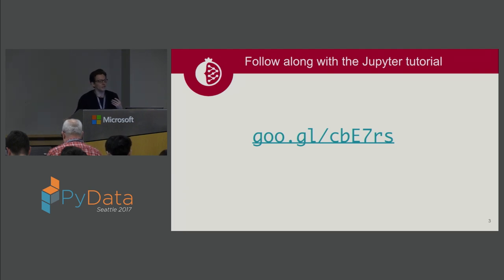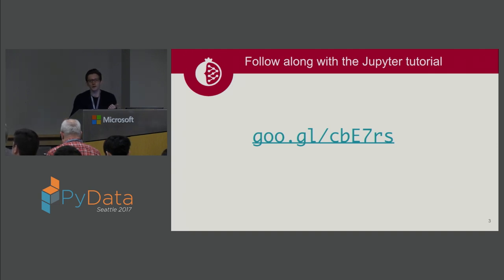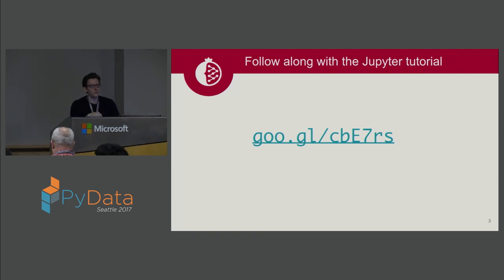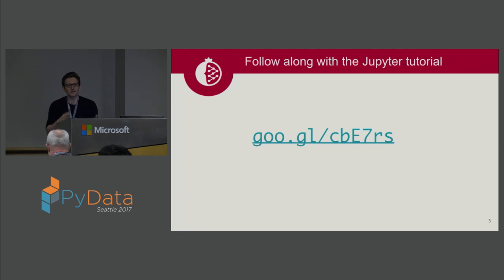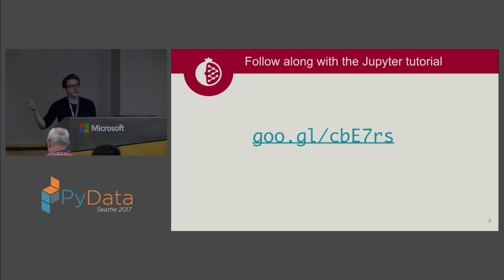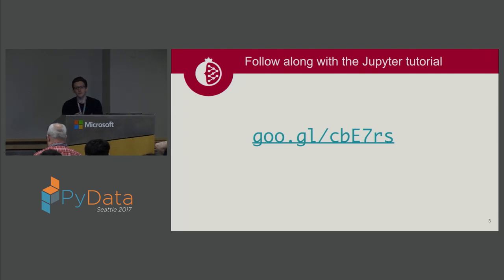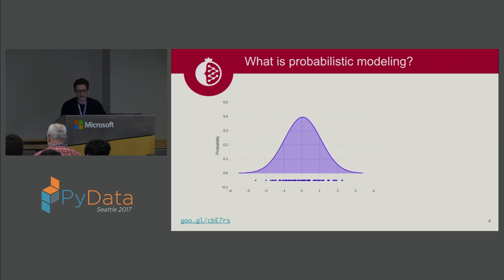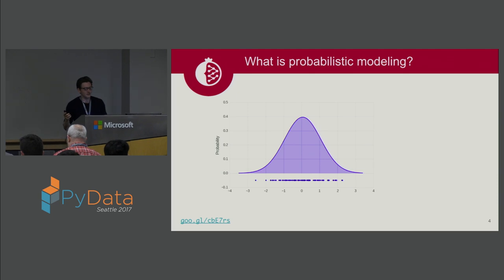This talk is about Pomegranate, which is a Python toolkit for fast and flexible probabilistic modeling. It is accompanied by a Jupyter notebook tutorial — the link here will take you to a notebook you can download. I think the notebook is probably an even better way to understand this than me talking at you. I encourage you strongly to go to this link, download the notebook, open it on your computer, and start playing with the tools — that's a really nice sandbox.